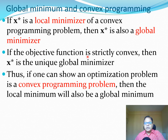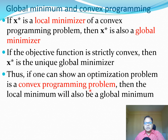If the function is strictly convex, there is a unique global minimizer. One important task is to determine whether a problem is a convex programming problem. This is possible in some situations, but in many engineering problems unfortunately it is not. This is highly domain- and problem-dependent, so you need to check the literature in your field to determine whether the design problems you face are convex programming problems or not.